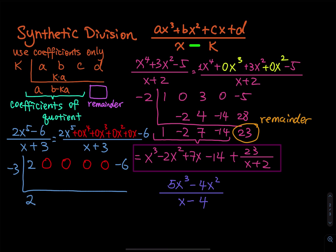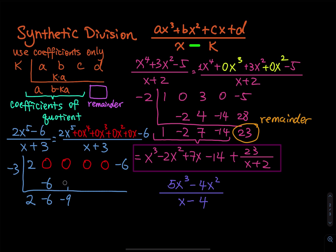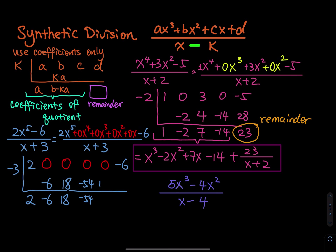Pull the two down. Two times negative three is negative six. Zero plus negative six is negative six. Negative six times negative three is positive eighteen. Zero plus eighteen is eighteen. Eighteen times negative three is negative fifty-four. Zero plus negative fifty-four is negative fifty-four. Negative fifty-four times negative three gives one hundred sixty-two plus zero, giving one hundred sixty-two. One hundred sixty-two times negative three is negative four hundred eighty-six. Negative six plus negative four hundred eighty-six is negative four hundred ninety-two.